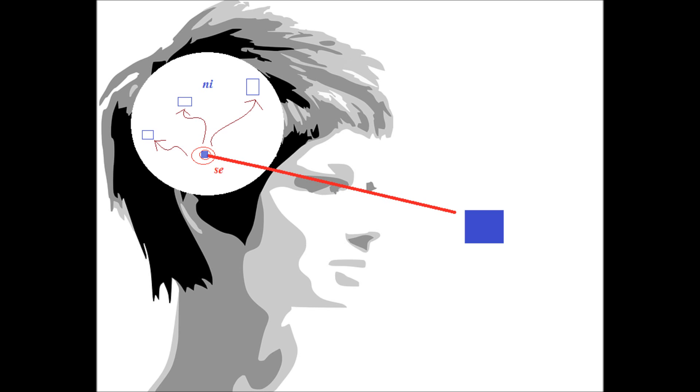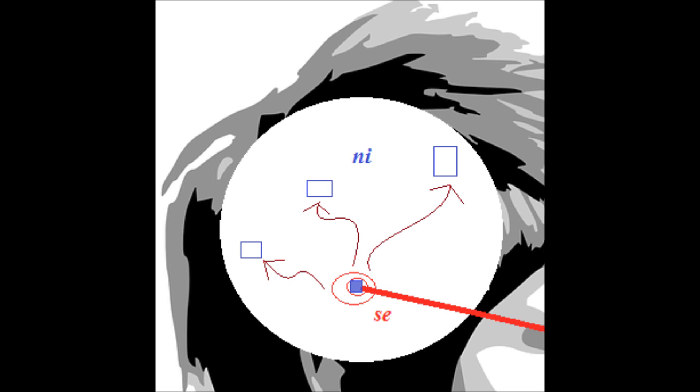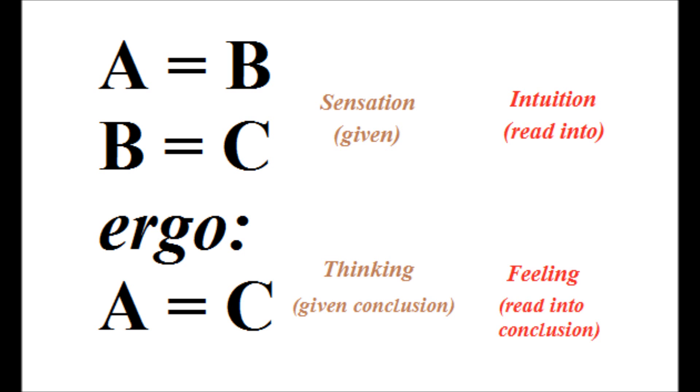One might then easily theorize that when an individual is processing material through a particular function, say introverted intuition, it is not working in isolation, even though we can consider it in isolation theoretically. Because intuition is by definition interpretation, and this interpretation cannot occur unless the data has been clearly apprehended somehow. This would then theoretically be occurring unconsciously through extroverted sensation.